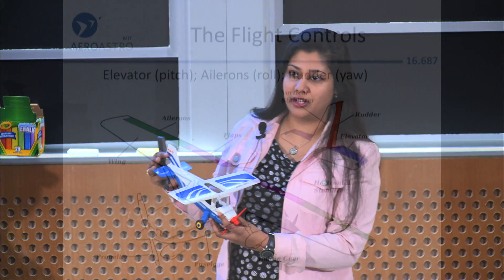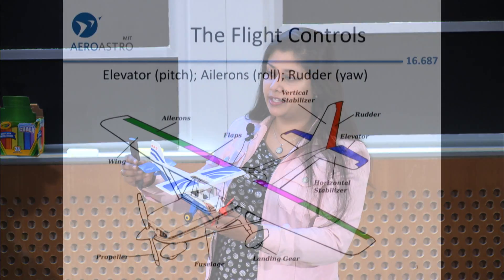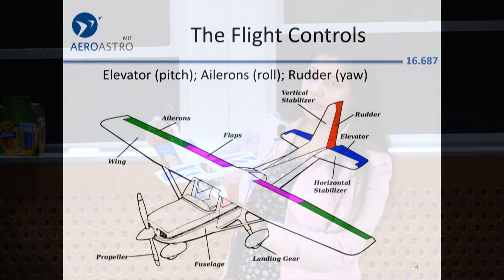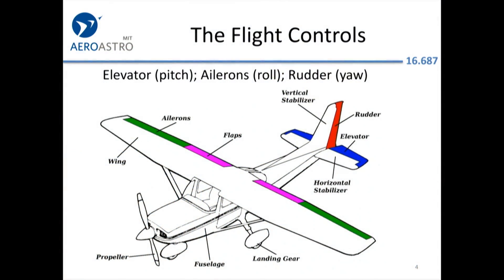Back at the tail, there are several components. On the vertical stabilizer, we have the rudder shown in red, and the horizontal stabilizer has the elevator shown in blue.